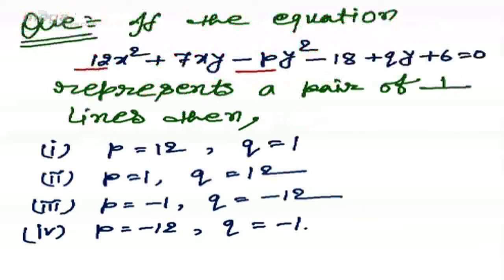Looking at the options, only option 1 includes p = 12, and there is no 'none of these' option. Therefore option 1, p = 12 and q = 1, is the correct answer — even without solving the whole question. But we will now solve fully to find q.